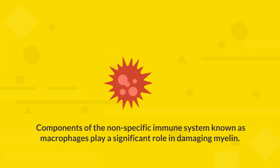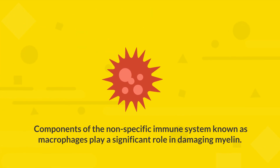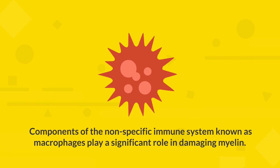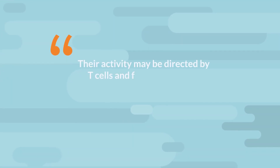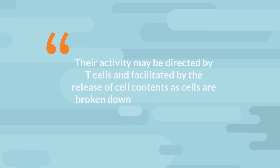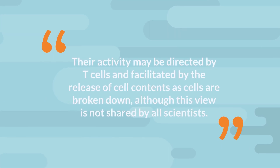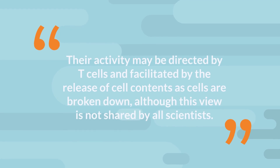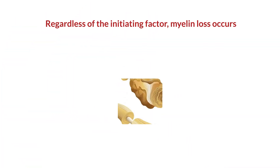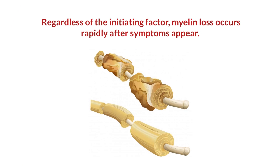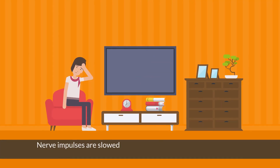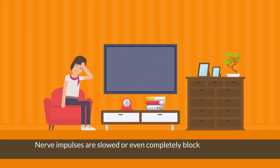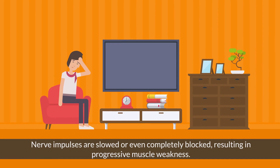Components of the nonspecific immune system known as macrophages play a significant role in damaging myelin. Their activity may be directed by T-cells and facilitated by the release of cell contents as cells are broken down, although this view is not shared by all scientists. Regardless of the initiating factor, myelin loss occurs rapidly after symptoms appear. Nerve impulses are slowed or even completely blocked, resulting in progressive muscle weakness.